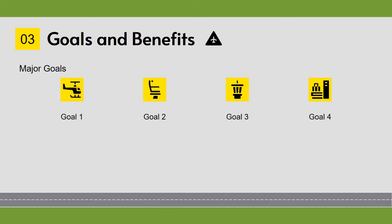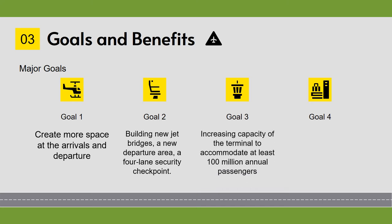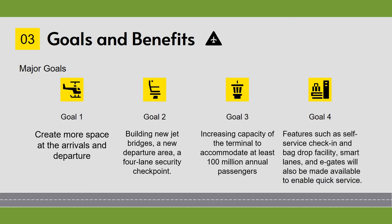The goals and benefits of our project are as follows. Goal one is to create more space in the arrivals, baggage area, and departure area. Goal two is building new jet bridges, a new departure area, and four-lane security checkpoints for customers. Goal three is increasing terminal capacity to accommodate at least 100 million annual passengers. Features such as self-serve check-in, bag drop facilities, smart lanes, and e-gates will also be made available for quick service.